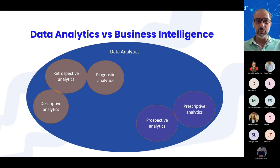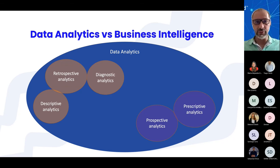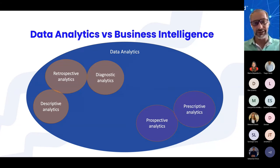Within data analytics, there are different approaches and different focuses. We have descriptive analytics, which, as its name says, describes the data — it tells us how frequently events occur, what is the highest value, the lowest, the average, and so on. We can tell whether a specific value is above or below the average. In conclusion, this type of analysis gives us context to compare and understand the data.